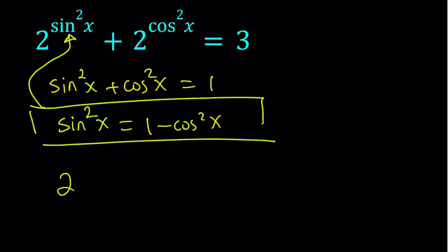So we get 2 to the power 1 minus cosine squared x plus 2 to the power cosine squared x is equal to 3. Obviously, similarly, you could also isolate cosine squared and replace it with 1 minus sine squared. And it would give you pretty much the same thing. You would get the exact same solutions but you would be solving a sine equation as opposed to a cosine equation. That would be the only difference.